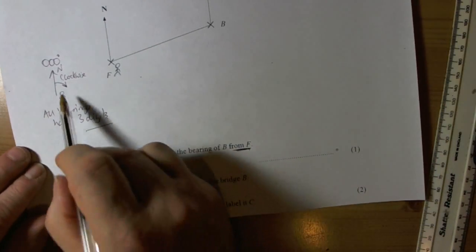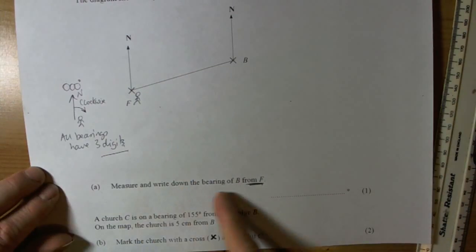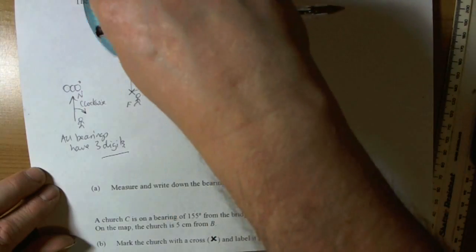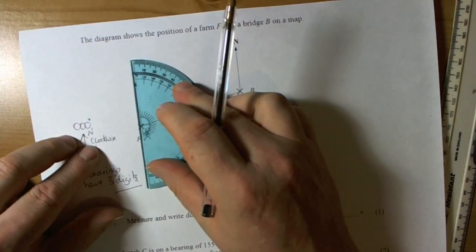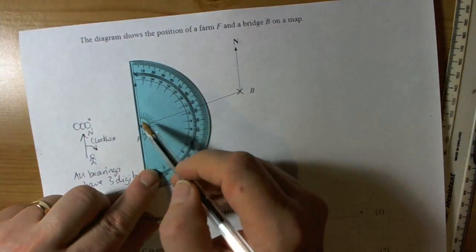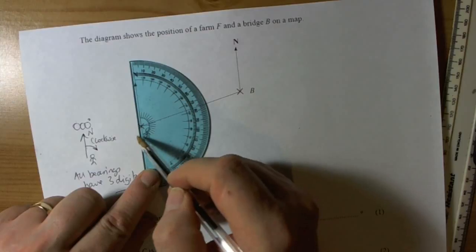So, key idea then. We get our protractor because it's asking us to measure. Again, the key idea is that we put the centre of the protractor on the point where we're from. So we're from F.